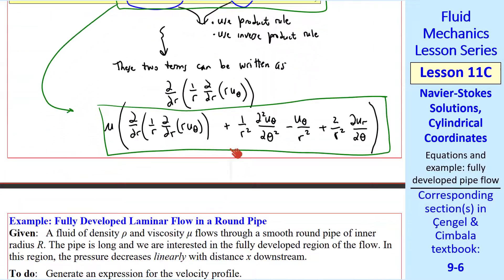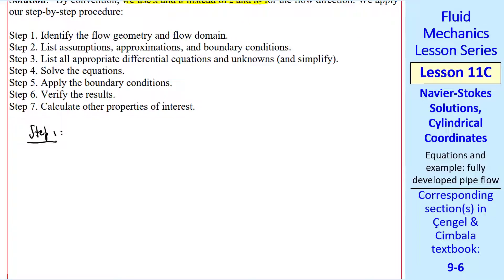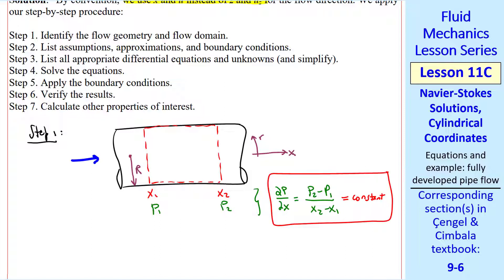So let's do our step-by-step procedure that we learned in an earlier lesson to solve for this flow. I list all the steps here. Step one is to identify the flow geometry and the flow domain. We take a section of the pipe of radius R. And our flow domain goes from x1 to x2. X is the coordinate in the flow direction. Flow is from left to right. And r is the distance from the centerline. At x1, the pressure is p1. And at x2, the pressure is p2. So dp/dx in the x component of the Navier-Stokes equation is (p2 - p1)/(x2 - x1). And this is a constant since the flow is fully developed. In fact, x1 and x2 can be anywhere along the pipe as long as this flow is fully developed. And dp/dx is just a drop in pressure as we move down the pipe.